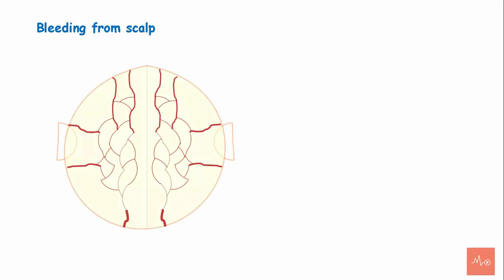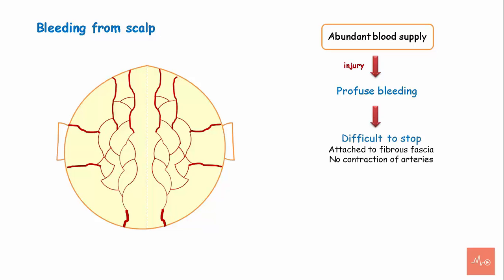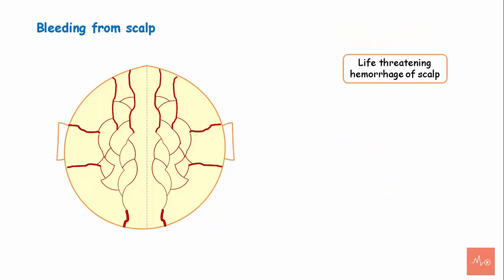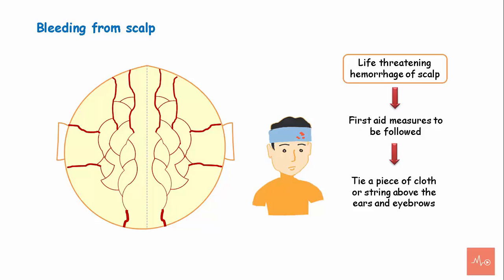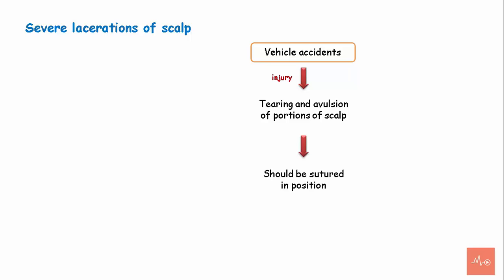Bleeding from the scalp: The scalp has abundant blood supply, and injury can lead to profuse bleeding. This is difficult to stop as the arteries are attached to fibrous fascia, which does not allow retraction or contraction to arrest bleeding. Pressure application against the bone can control bleeding. In life-threatening hemorrhage, first aid involves tying cloth above the ears and eyebrows as a tourniquet. Severe lacerations during vehicle accidents can cause avulsion of scalp portions, which should be sutured as they heal well due to rich blood supply.